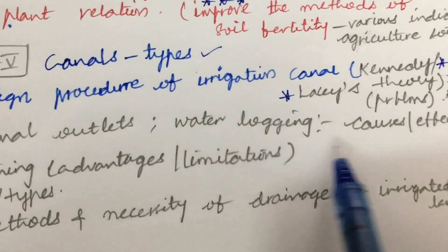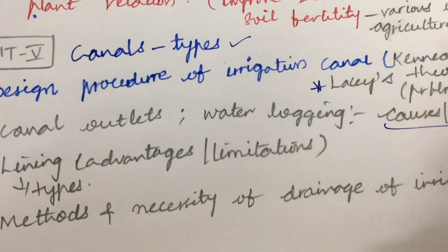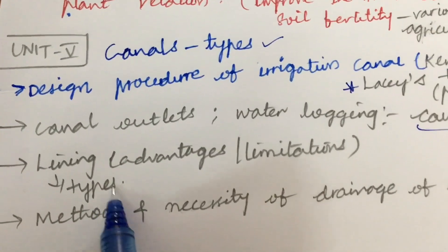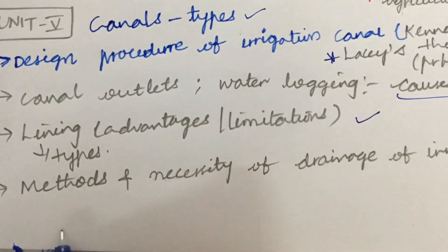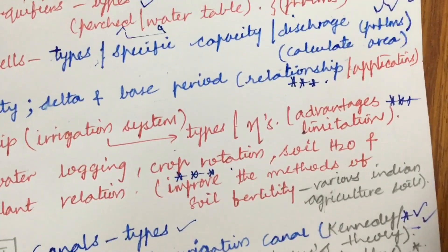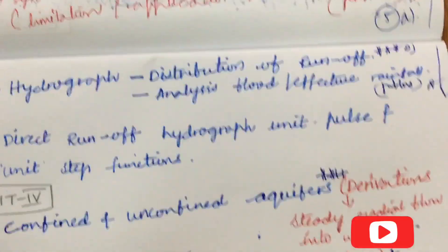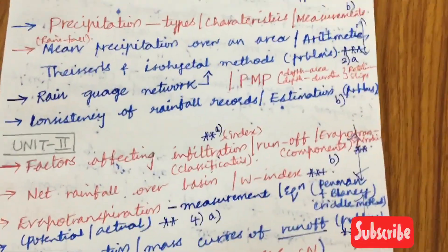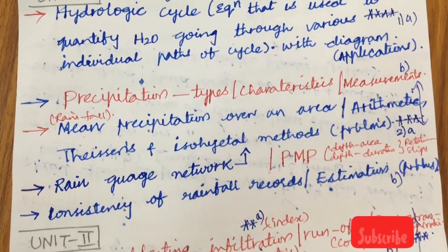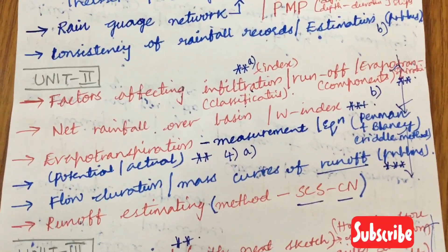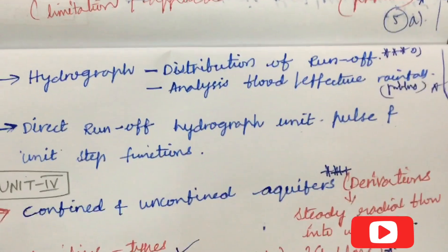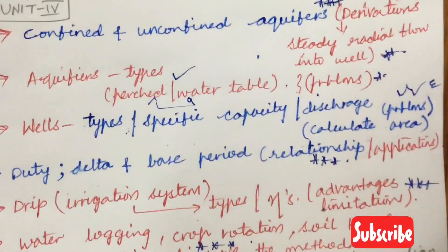Canal outlets, water logging, and their causes and effects may also be asked. Do not expect direct 15-mark questions — it is a split of 10-5, 7-8, or 5-10 combinations. Types of canal lining, their advantages and limitations, and methods and necessity of drainage of irrigated land are also important. Do not expect direct questions; application-related questions from Hydrology and Water Resource Engineering may also appear. Make sure to cover all these concepts and aim for better performance. Write answers in bullet points, not paragraphs, draw all diagrams in pencil, label them, and carry your calculator.